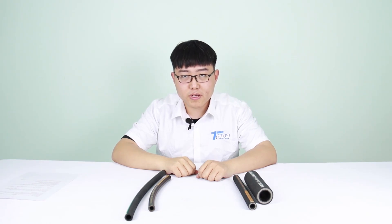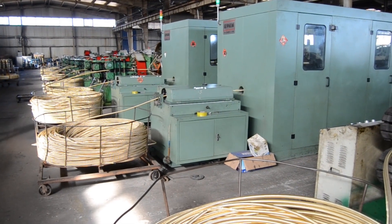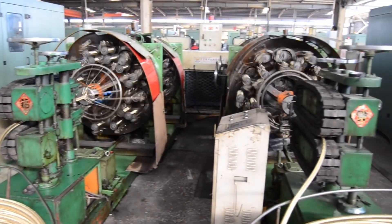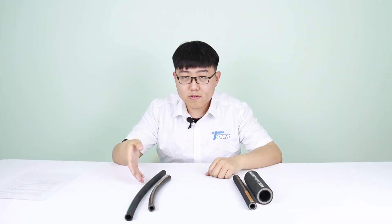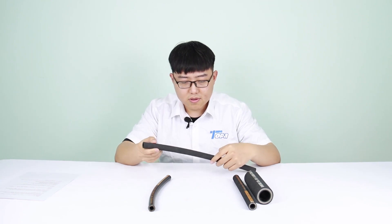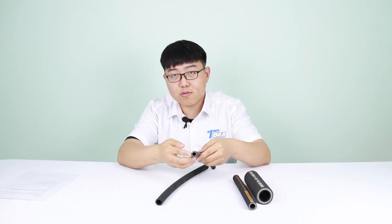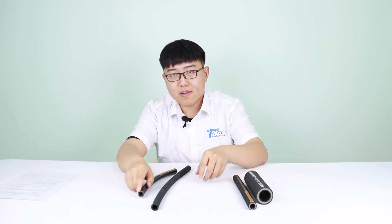Today let me show you what's the difference between braided hose and spiral hose. There are two types of hydraulic hose: braided hose and spiral hose. Braided hose can be divided into R1 and R2. R1 has one layer, R2 has two layers. As you can see by the inside, the wire is braided just like this, on top of each other.